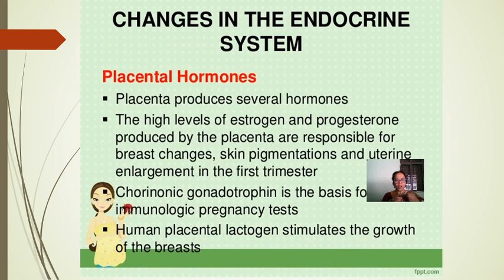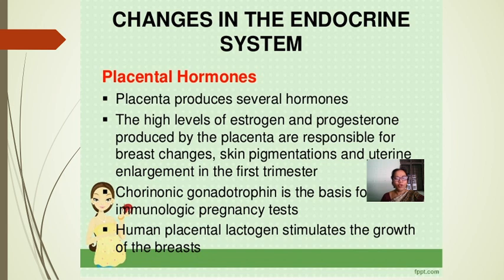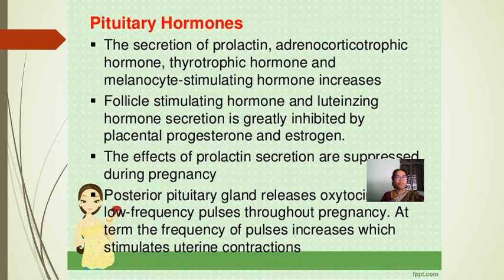Endocrine system — placental hormones: the placenta produces several hormones. High levels of estrogen and progesterone produced by the placenta are responsible for breast changes, skin pigmentation, and uterine enlargement during the first trimester. Chorionic gonadotropin is the basis for the immunologic pregnancy test. Human placental lactogen stimulates the growth of the breasts.